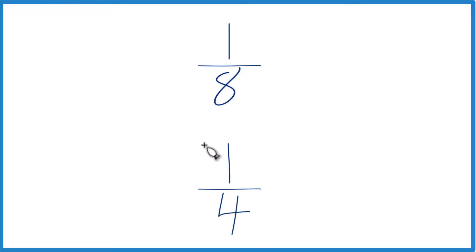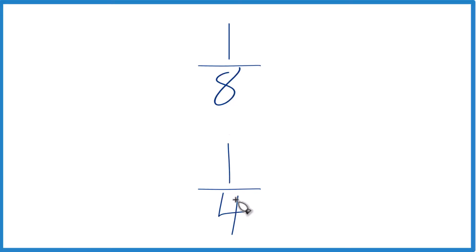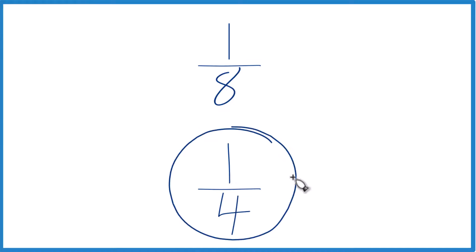You can also kind of reason it out. If you had one object and you divided it into 8 pieces, or if you took that one object and divided it into 4 pieces, which one would have bigger pieces? The 1/4 here. And 1/4 is greater than 1/8.